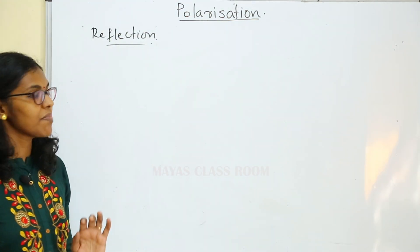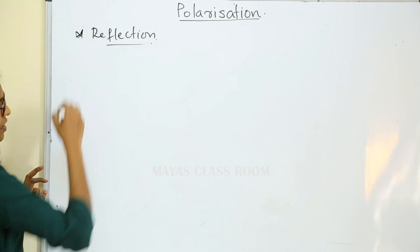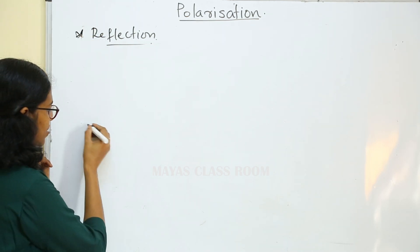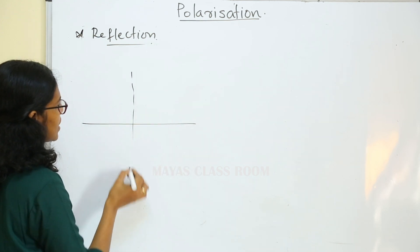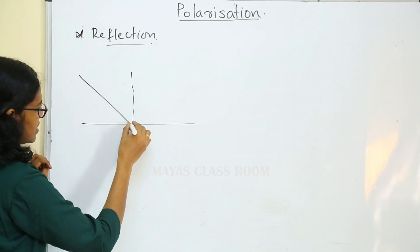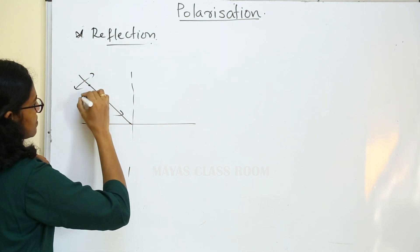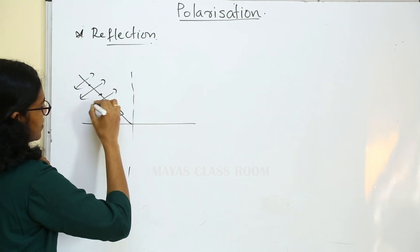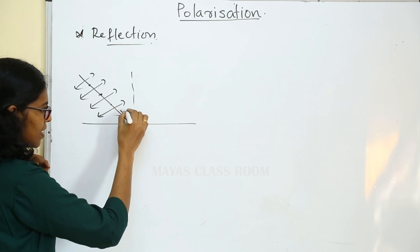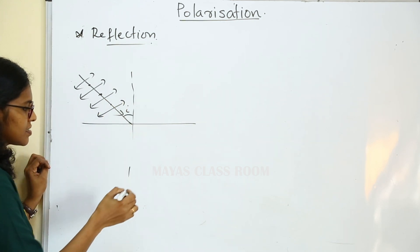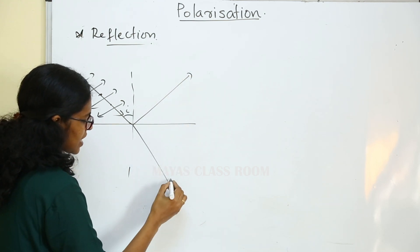Polarization by Reflection is a very important section. If we want to make a transparent medium, we will make an unpolarized light incident. We will make an angle of incidence.